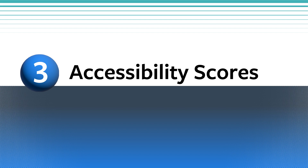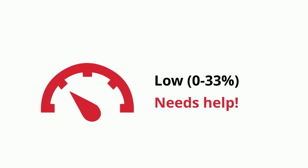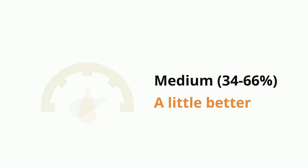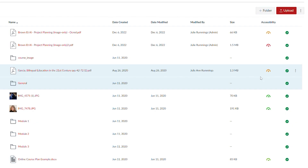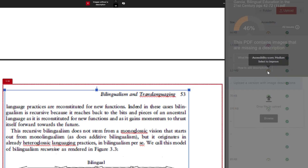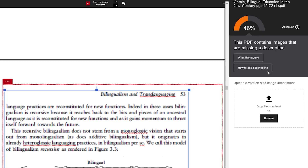Number 3: Accessibility Scores. The first thing that might have tipped you off to Ally being turned on in your course is the little icon that appears near any file. This little icon ranks the accessibility of your file from low to perfect. Clicking one of these icons will open details about the accessibility score, including links to information about how to fix any accessibility issues.